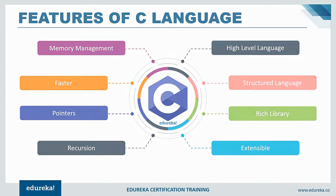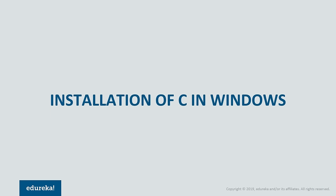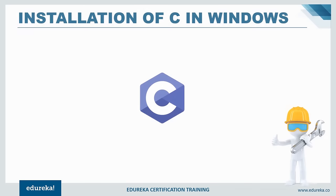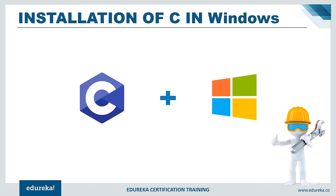Moving to the installation of C on a Windows system, C can be installed in multiple ways. The most basic way is installing Turbo C. If you prefer Eclipse IDE, you can download the GCC compiler and add C nature to Eclipse. The last and simplest method is using an online compiler where you can directly write and execute your code.